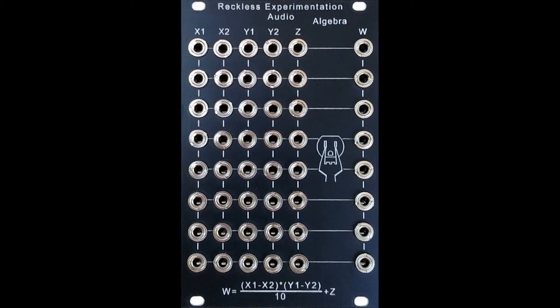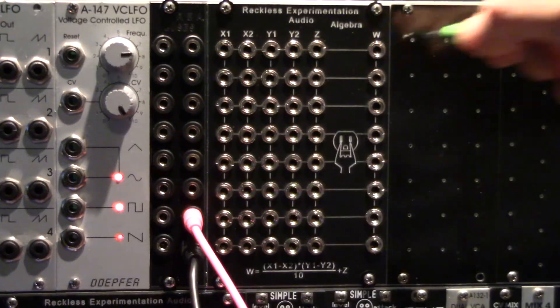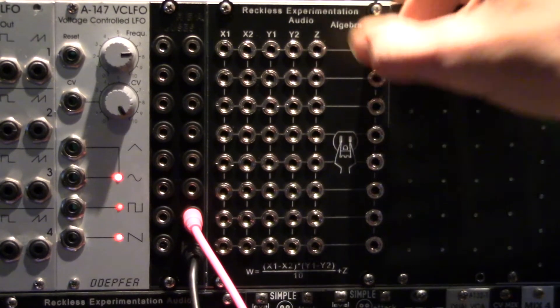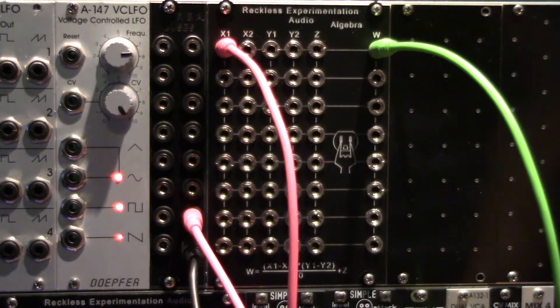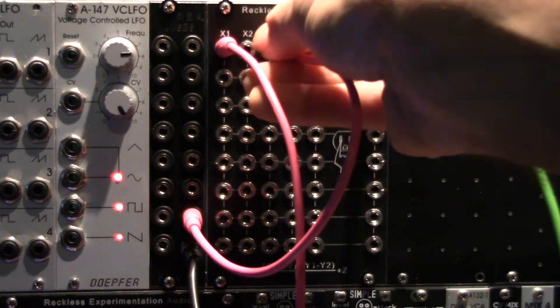All inputs are bipolar. Any unused input has a zero value. To set up a channel as a standard linear VCA, simply connect the sound source to X1 and your envelope generator to Y1. Unity gain is achieved at 10 volts.